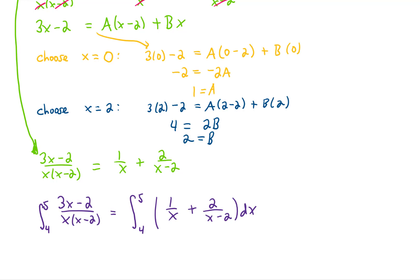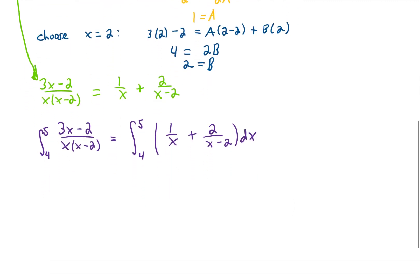Now we have an integral that can be completed. Each one of these two terms can be integrated fairly simply. The first term integrates to the natural log of x, and the second term integrates to 2 times the natural log of x minus 2. And because this is a definite integral, we're going to evaluate it from 4 to 5.